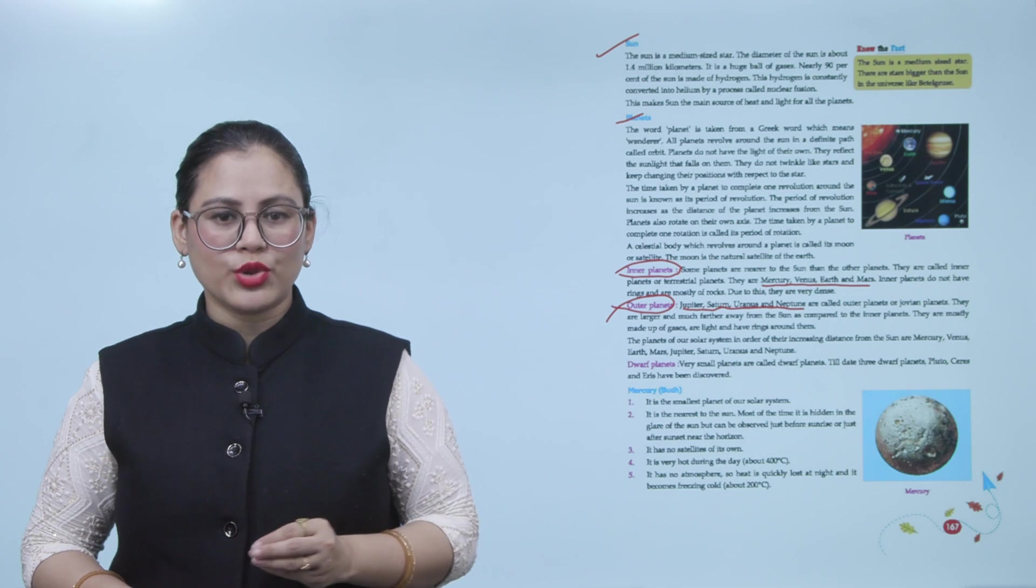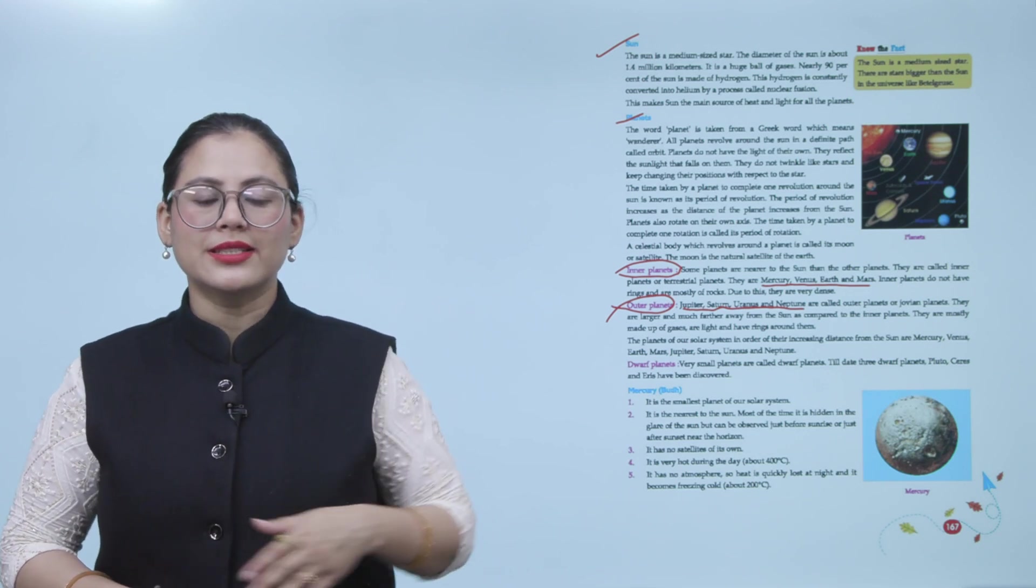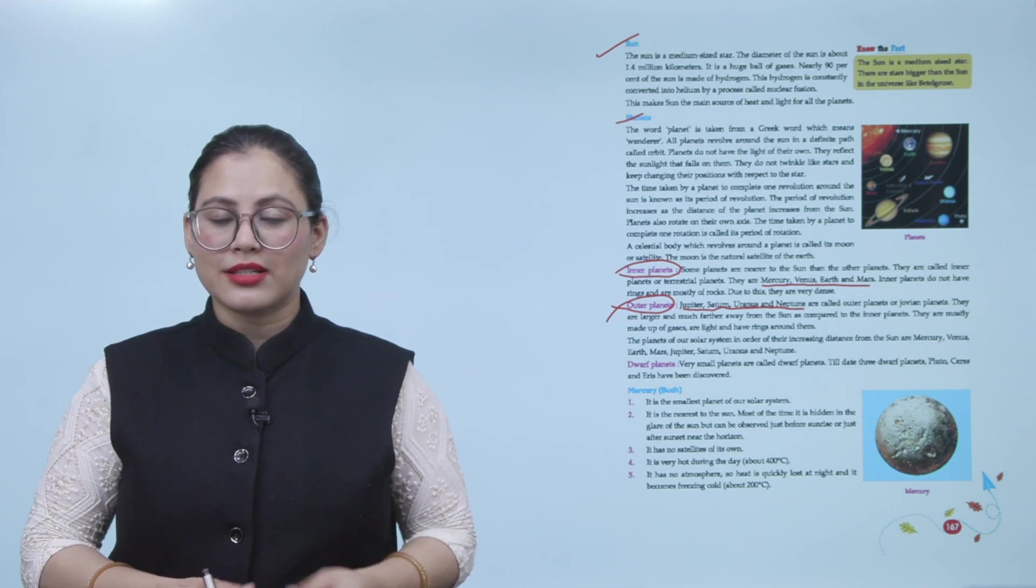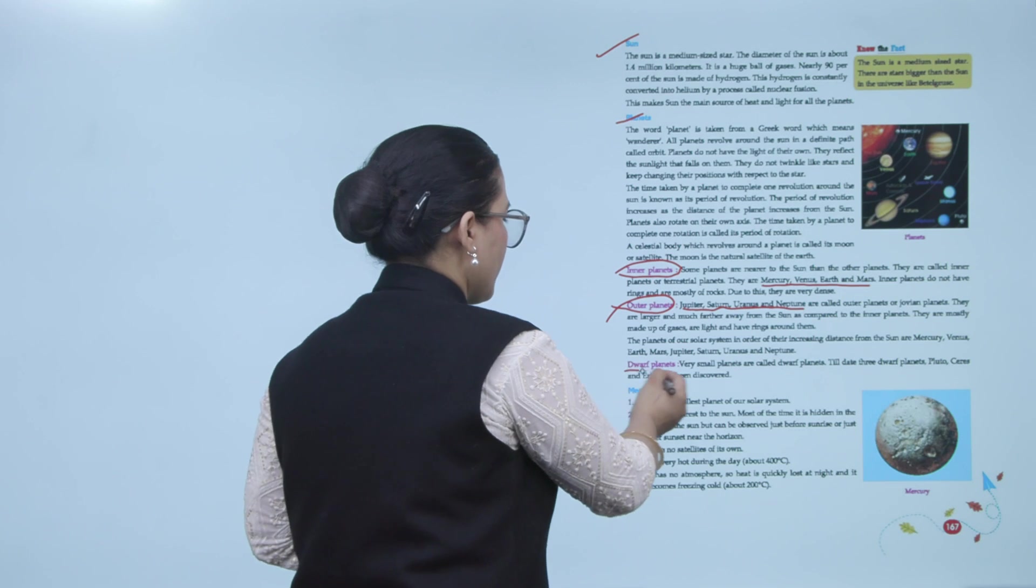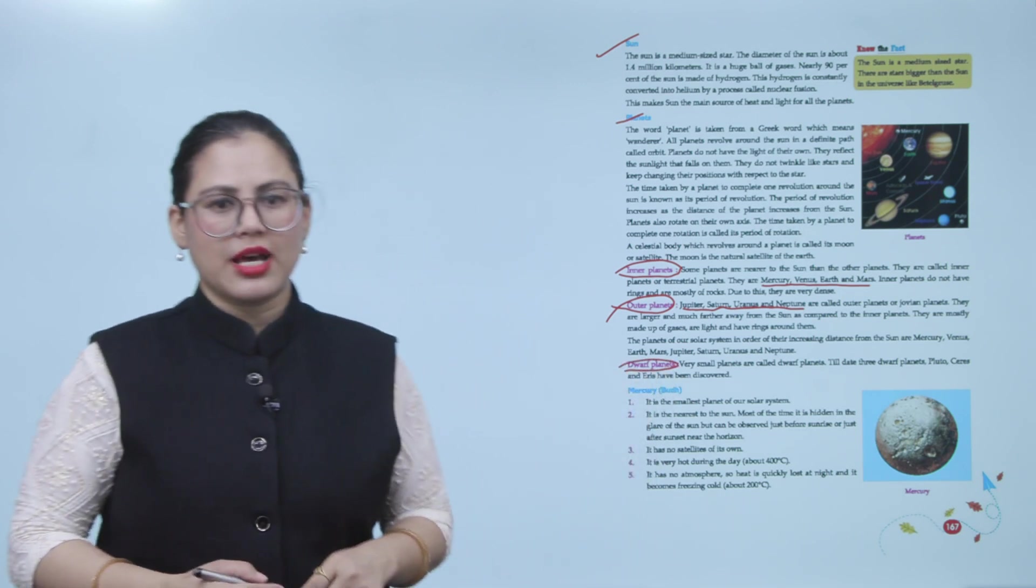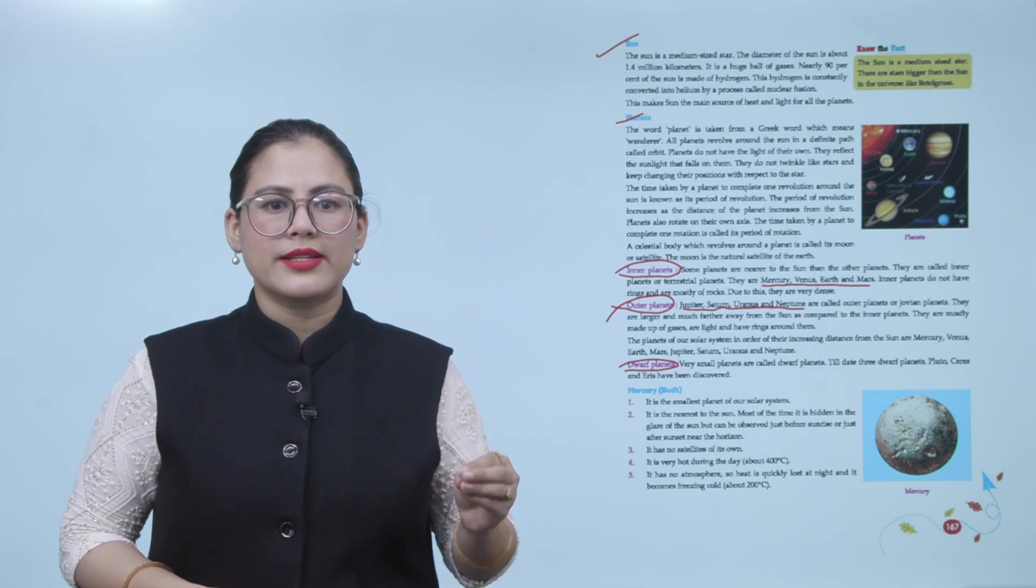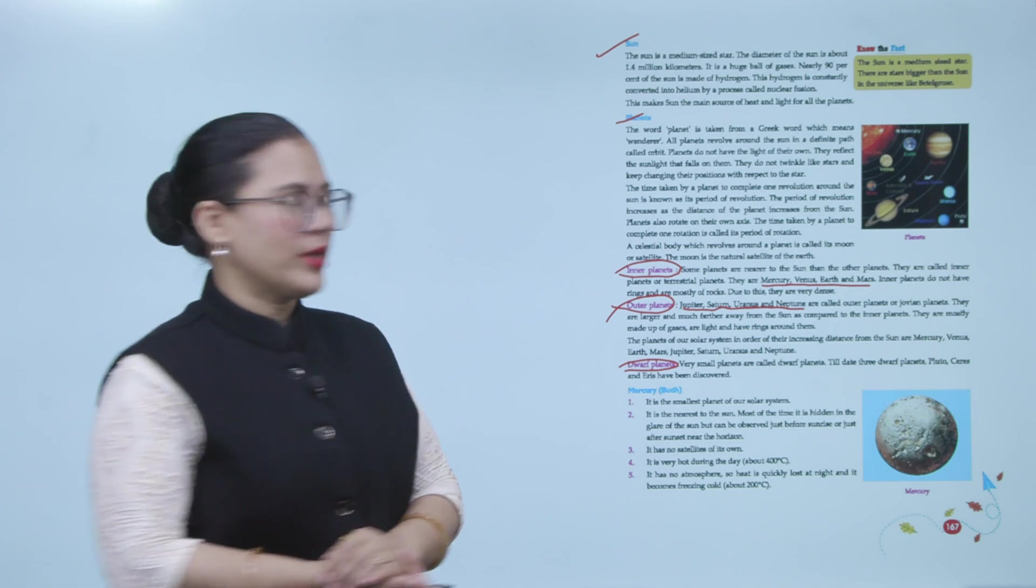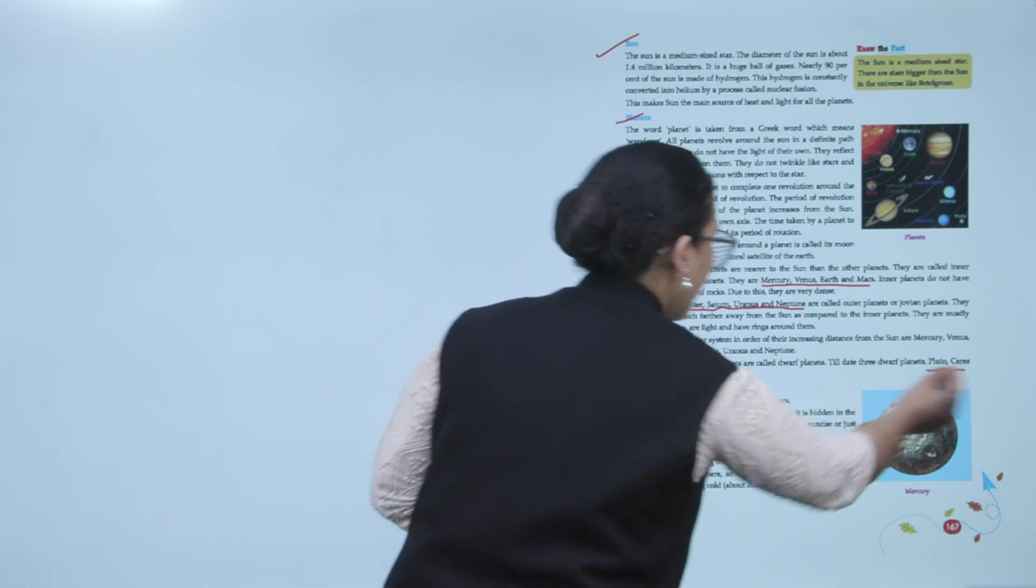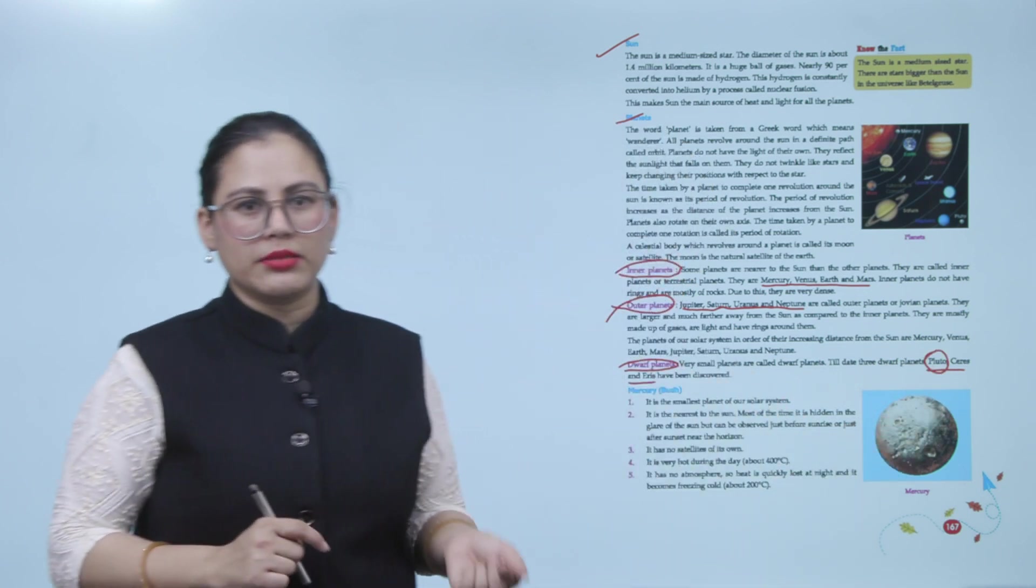The planets of our solar system in order of their increasing distance from the sun are Mercury, Venus, Earth, Mars, Jupiter, Saturn, Uranus, and Neptune. Dwarf planets. Very small planets are called dwarf planets. Till date, three dwarf planets—Pluto, Ceres, and Eris—have been discovered. These three are dwarf planets.